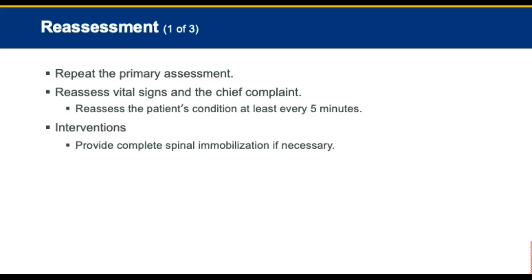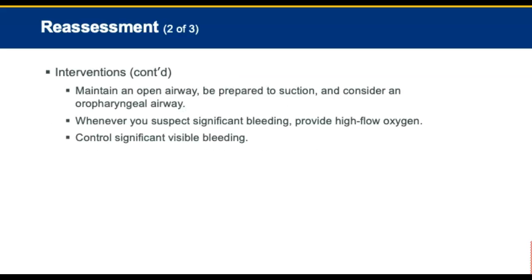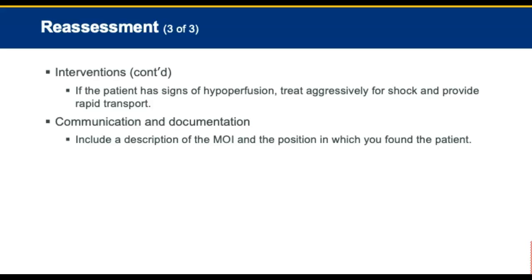You must provide complete spinal immobilization to any patient with suspected spinal injuries. Maintain an open airway and be prepared to suction the patient. Whenever you suspect significant bleeding, provide high flow oxygen and control any significant visible bleeding. If the patient has any signs of hypoperfusion, treat the patient aggressively for shock and provide rapid transport. Do not delay transport of a seriously injured patient to complete non-lifesaving treatments in the field. In your documentation, include a description of the mechanism of injury and the position in which you found the patient.